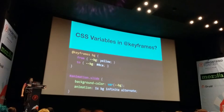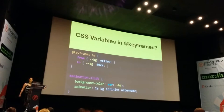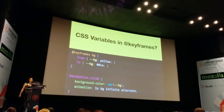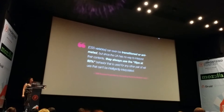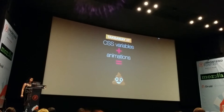Even though CSS variables are token lists, the browser still pretends it doesn't know how to animate them — it sees some whitespace at the beginning and a color afterwards and doesn't know what to do. So it throws its hands up and says 'I don't know how to animate this — I'll just do what I do with non-interpolatable properties.' The actual quote from the spec is: 'CSS variables can even be transitioned or animated, but since the UA has no way to interpret their contents, they always use the flip-at-50% behavior.'